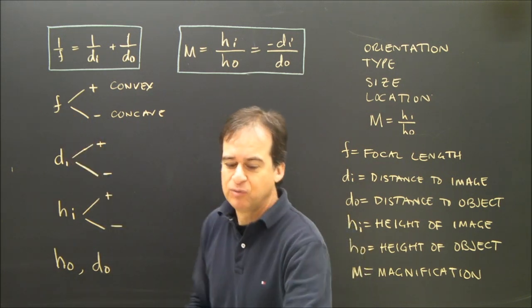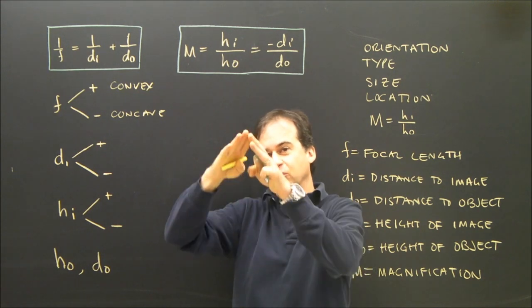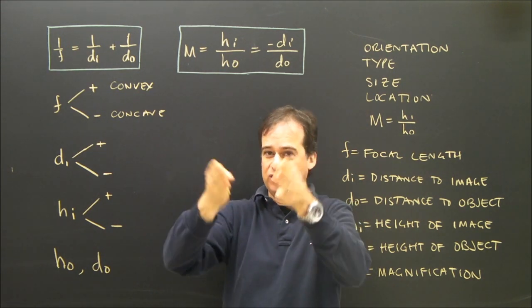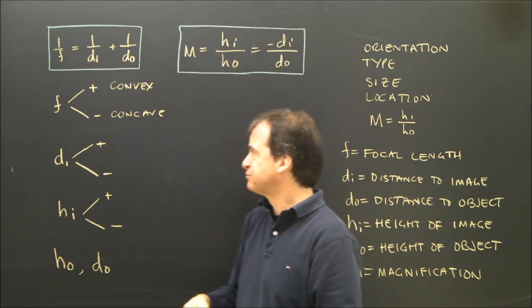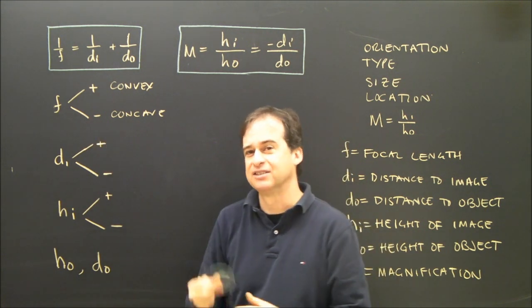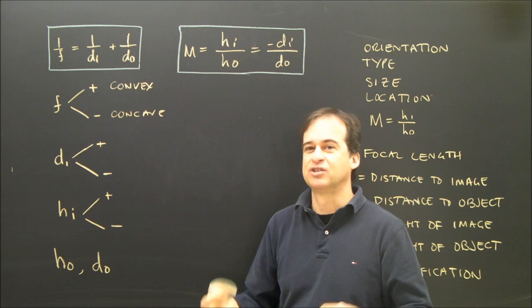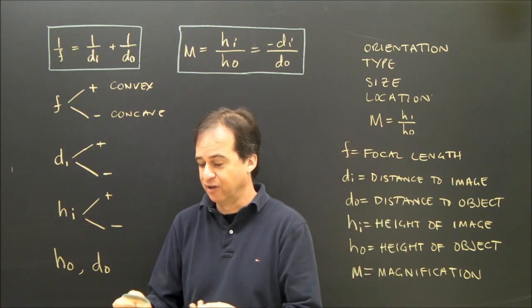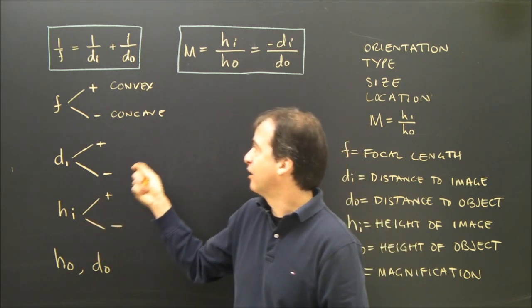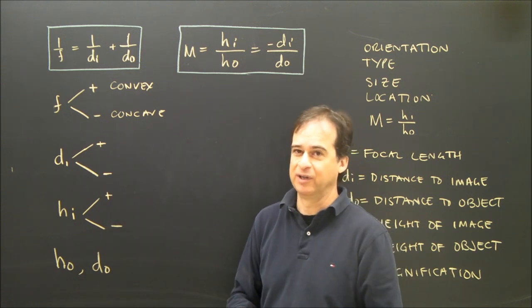We use convex lenses a lot. Those are the ones that are shaped this way, as opposed to concave, which is shaped this way. We use convex lenses a lot, they can create real or virtual images, they're in cameras, overhead projectors, projectors, glasses, although concave lenses are very common in glasses too.